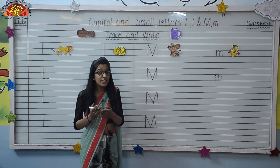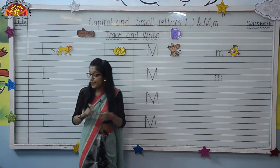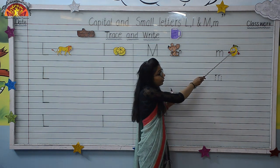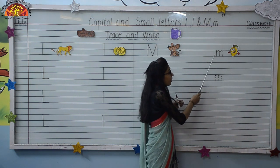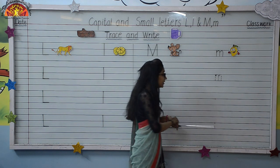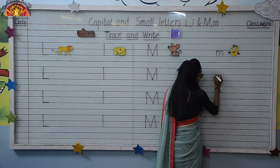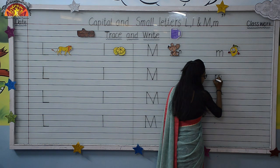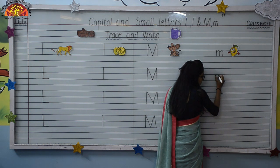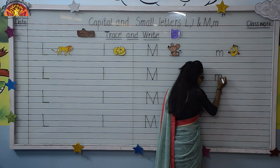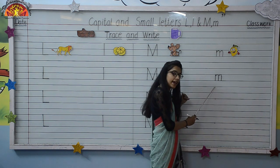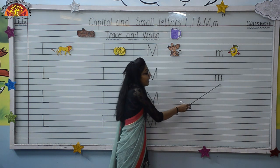Now we will trace small letter M. M for mango — this is a mango. Let's start tracing. Start from here, make a small standing line, up with the same line, curve. Again, small standing line, up with the same line, curve. Again, standing line and touch it. This is small letter M. M for mug.